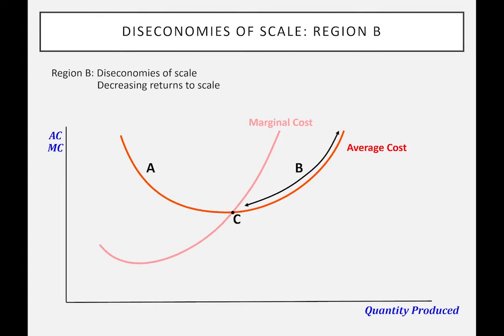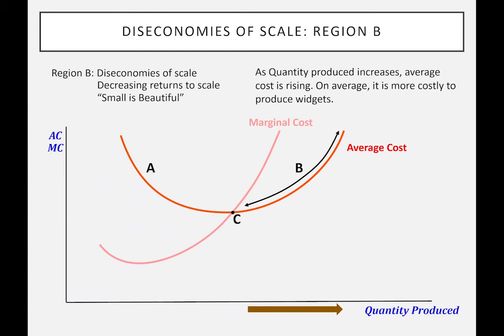The next case — let's call this region B. Now in this case, if the firm starts to produce more, the average cost is increasing, which means it becomes more expensive to produce a particular good. Again, this is going to depend on technology. The curves I'm showing here happen to be based on a particular technology — it may be different. We're going to look at this case later when we consider different market structures. But as a first approximation, this is not a bad way of looking at it.